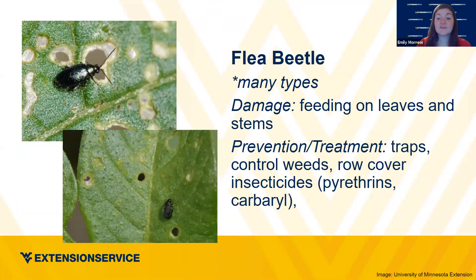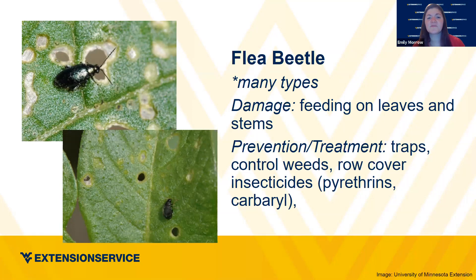Flea beetle damages crops by feeding on the leaves and stems. You can trap these with little sticky traps. Flea beetle is pretty common in eggplants — their holes are very tiny, which differs from a few other pests. Because the beetles are so dark, they're a little easier to find than aphids. There are row covers and different insecticides to control them as well. People have had various success with sticky traps depending on their population levels.